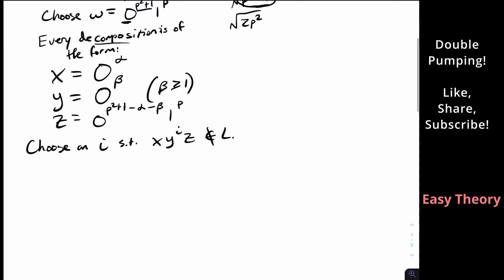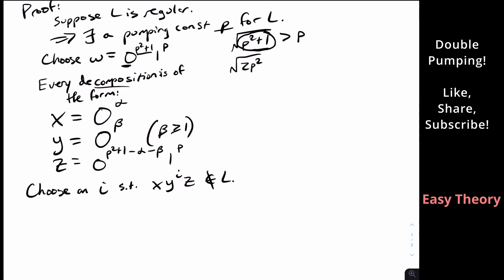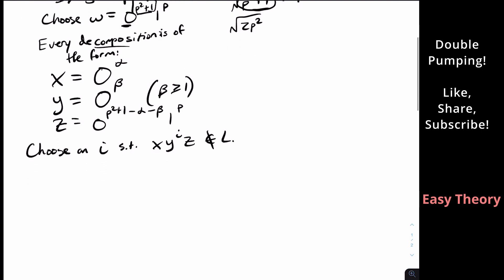So how do we do this? Well, notice that when I said that if I picked one smaller here, if I pick one smaller for the number of zeros that I have, I leave the language. So that means that's an indicator of pumping down. So let's choose i equal to zero.